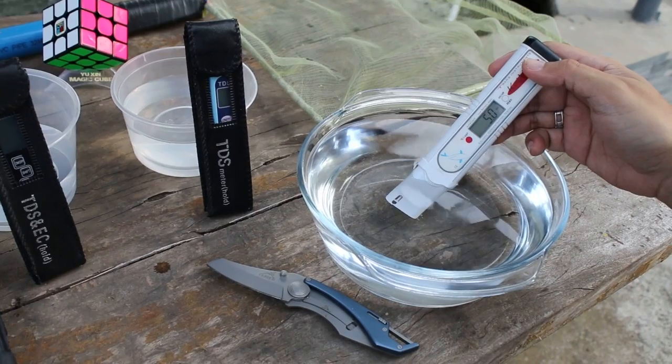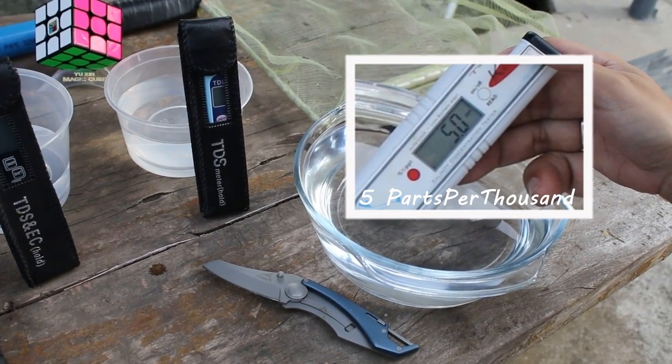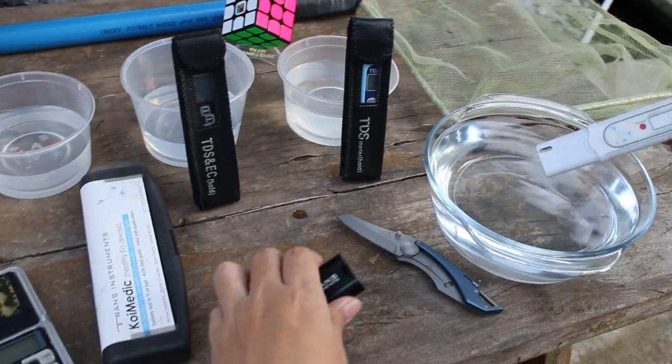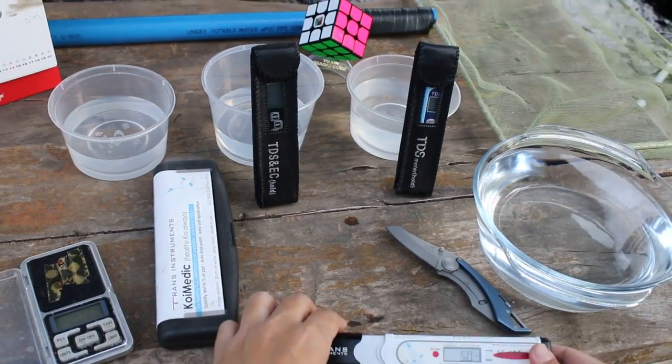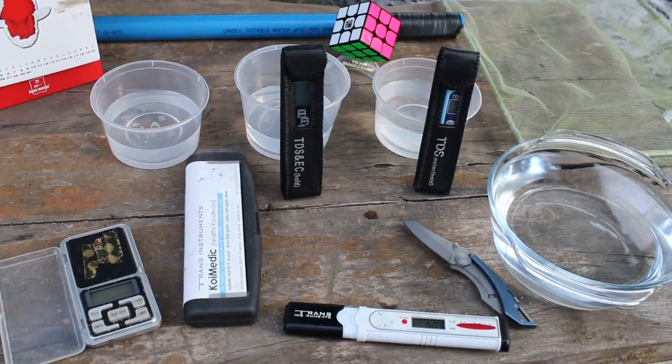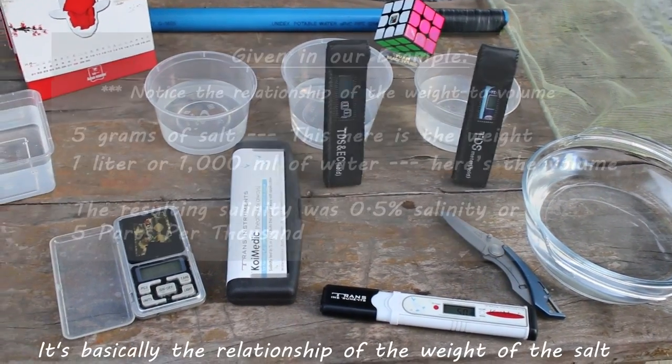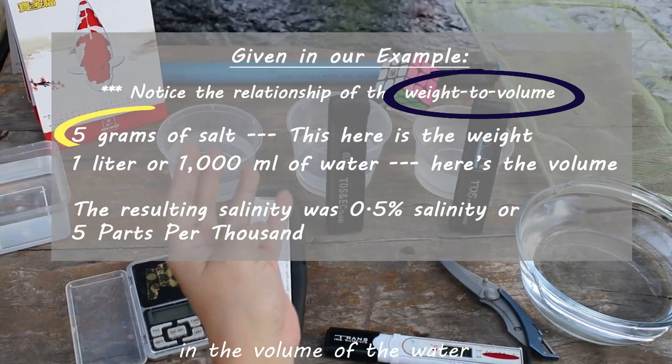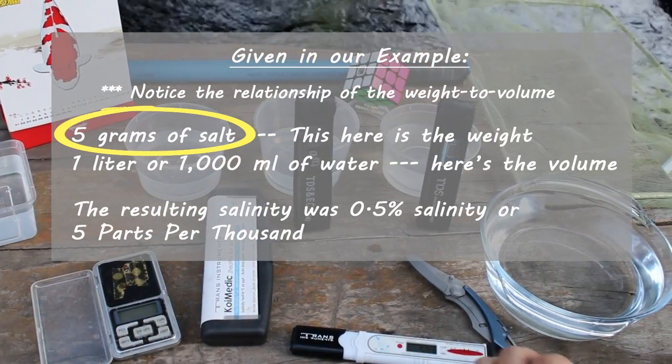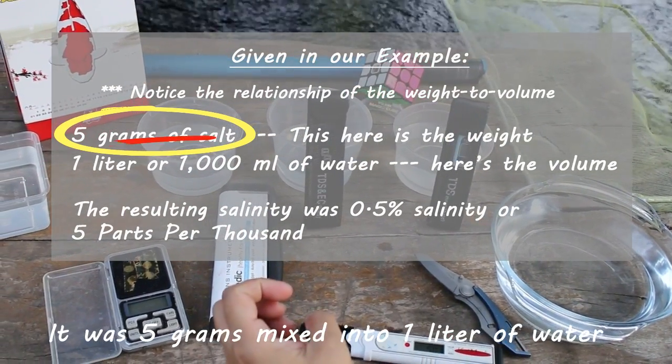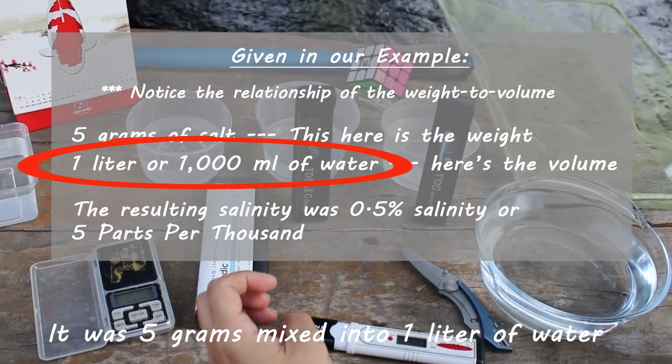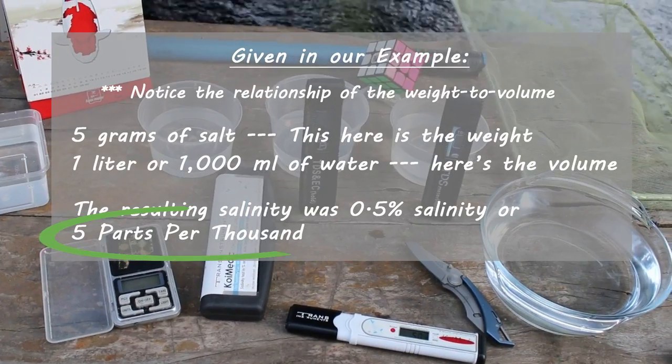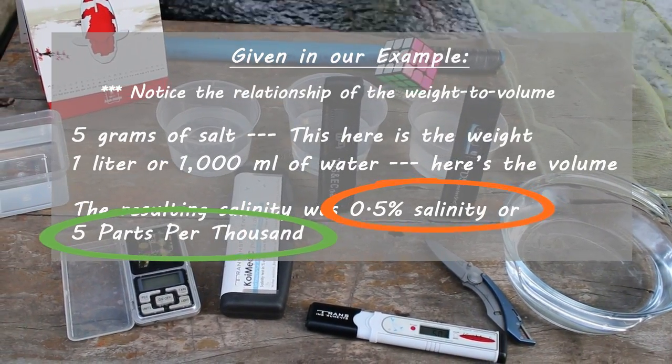So I hope this demonstration showed you a little bit of the basics of salt and water salinity. It's basically the relationship of the weight of the salt to the volume of the water. In our example, it was five grams mixed into one liter of water. The resulting salinity was five parts per thousand or 0.5% salinity.